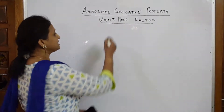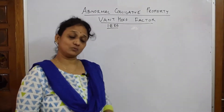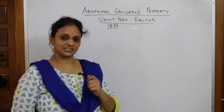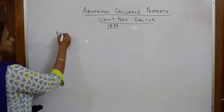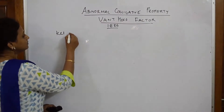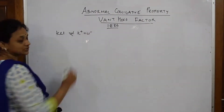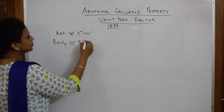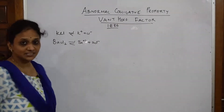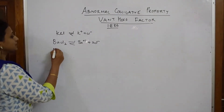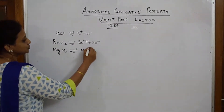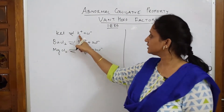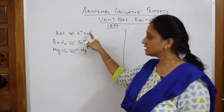This concept was proposed by Van't Hoff in 1886. What made him express this concept? Suppose I take KCl and dissolve it in a solution. KCl dissociates into K⁺ plus Cl⁻. Now suppose I take barium chloride or magnesium chloride — these dissociate into Ba²⁺ plus 2Cl⁻. These ionic compounds when they dissociate give one cation and one or more anions.